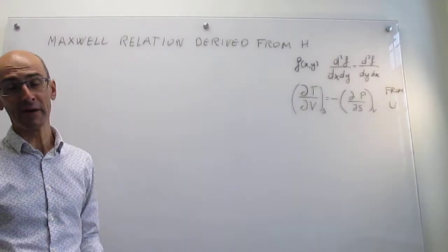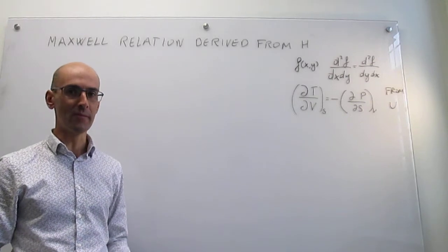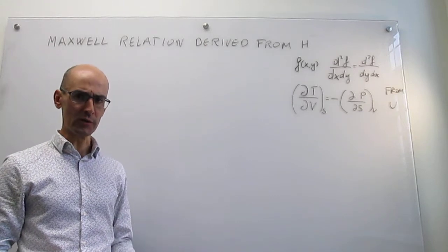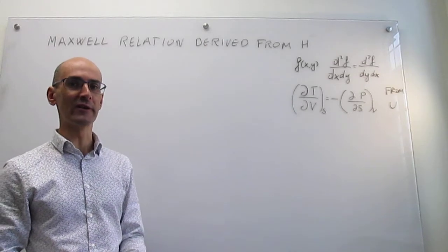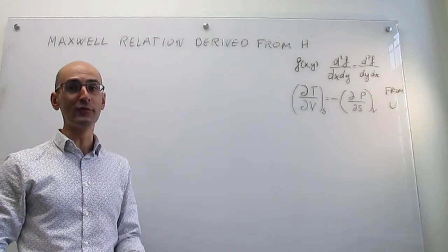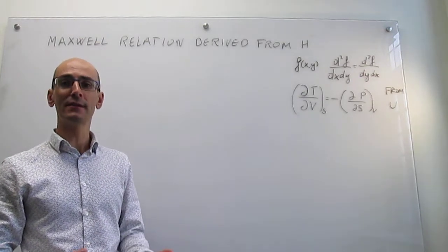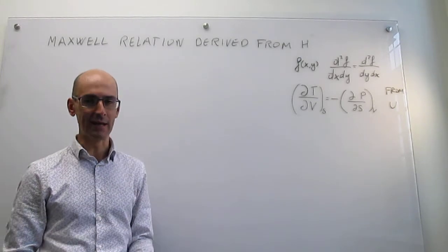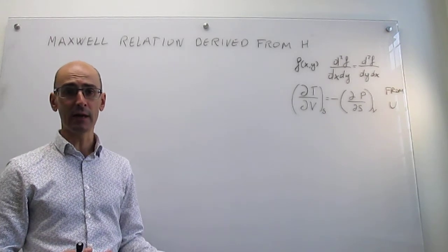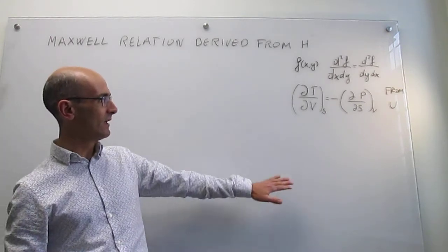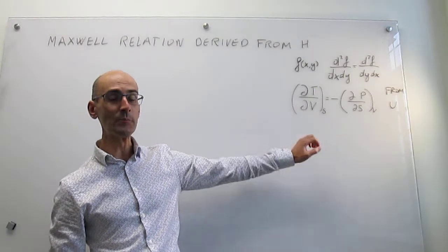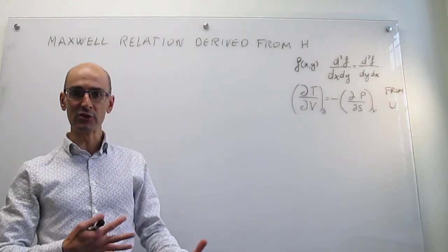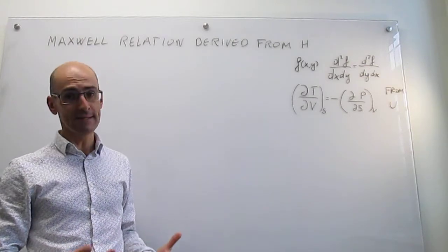In this video we're going to derive a Maxwell relation starting from the enthalpy. We're in the middle of a series of videos in which we're trying to derive Maxwell relations between thermodynamic variables starting from fundamental thermodynamic equations of state functions that we know, like internal energy, enthalpy, Gibbs energy, and Helmholtz energy. In the prior video we looked at how this is done for the internal energy. In this video we move to the enthalpy and see what we can learn about relationships between variables starting from that enthalpy.